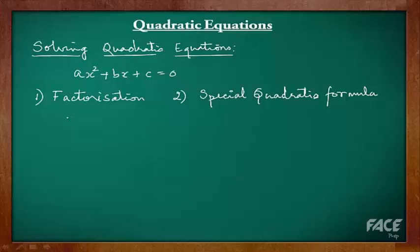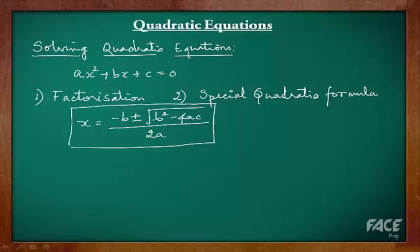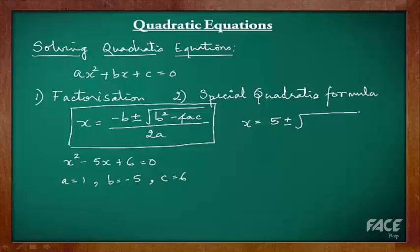The special quadratic formula is: x = (-b ± √(b² - 4ac)) / 2a. All we need to do is plug in the values of a, b and c. Let's take the previous example: x² - 5x + 6 = 0. The value of a is 1, b = -5, and c = 6. Plugging into the formula, we get x = -b, and since b = -5, minus of minus 5 is plus 5, plus or minus √(b² - 4ac), divided by 2a.